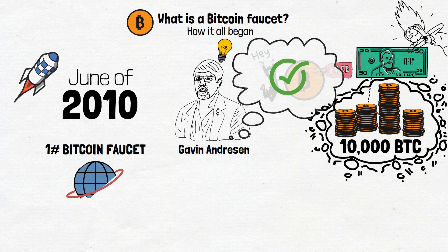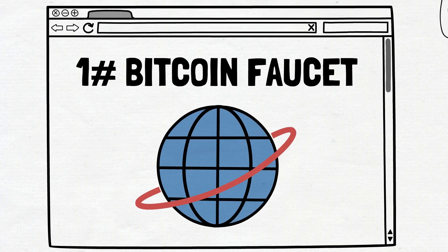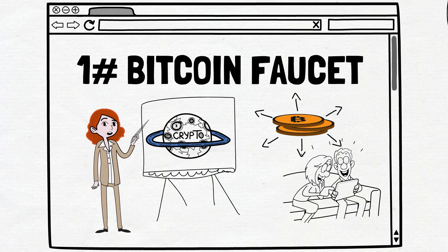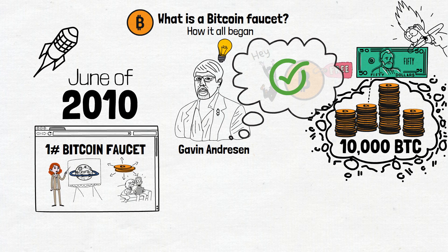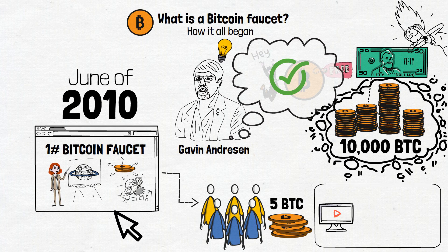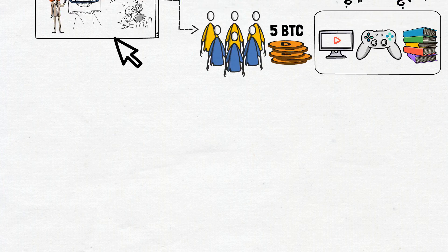His website was like a friendly introduction to the crypto world, and it distributed tiny amounts of Bitcoin as a way to get others curious about it. When the website launched, it gave people 5 BTC for each action they performed, which could be something like watching an ad, playing a game, or learning a bit about Bitcoin itself.